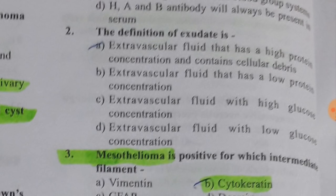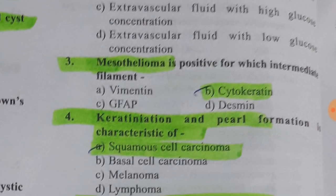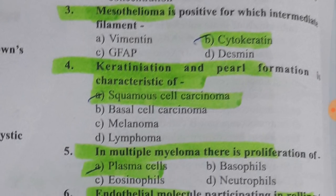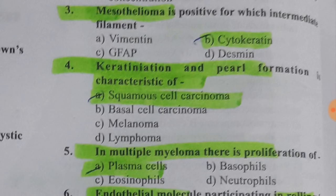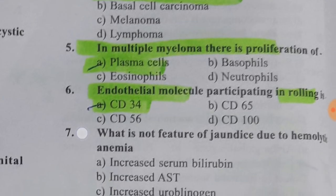Mesothelioma is positive for the intermediate filament cytokeratin — tumor markers are very important. Keratinization and pearl formation are characteristic of squamous cell carcinoma. In multiple myeloma there is proliferation of plasma cells. The endothelial molecule participating in rolling is CD34.